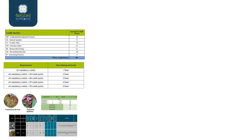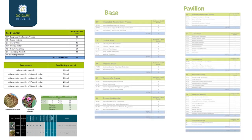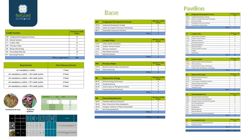According to the Estidama Pearl Rating System, the building must satisfy all mandatory requirements to achieve one pearl, and gets a higher pearl rating if it achieves a higher score. The base pavilion achieved one pearl scoring only 15 points, while the Campillion achieved five pearls scoring 73 points.